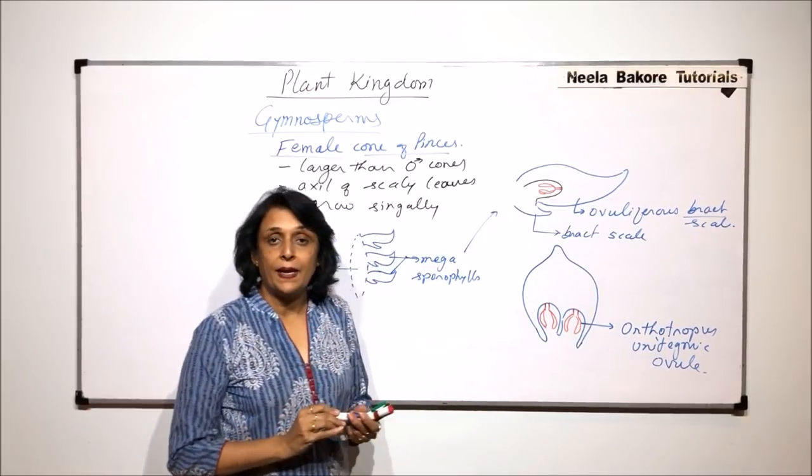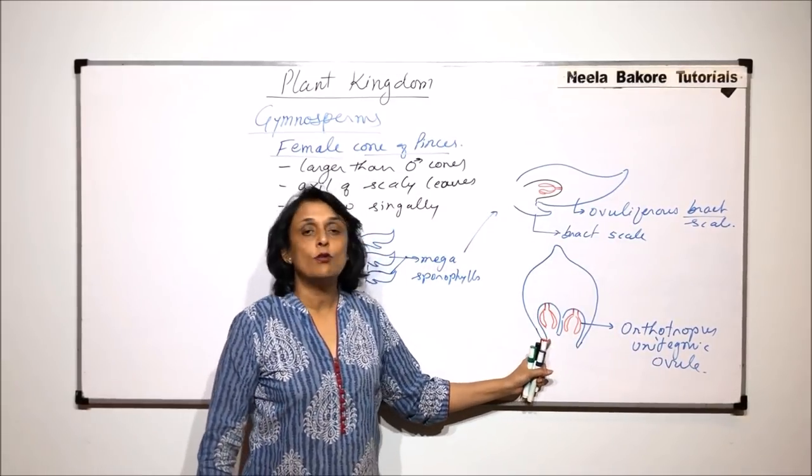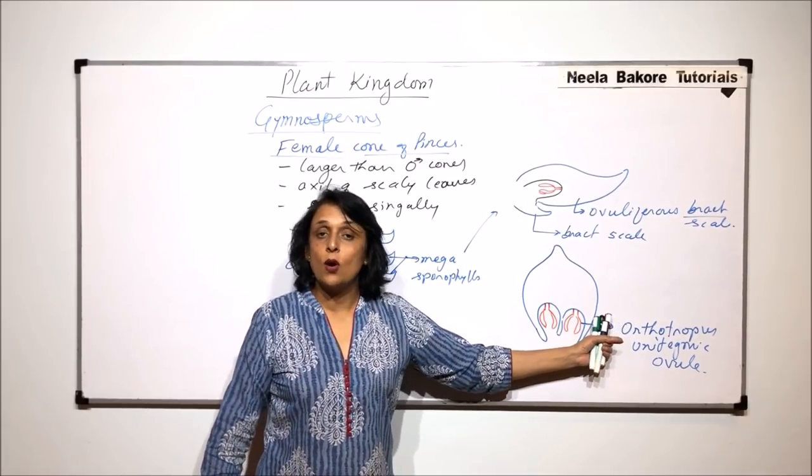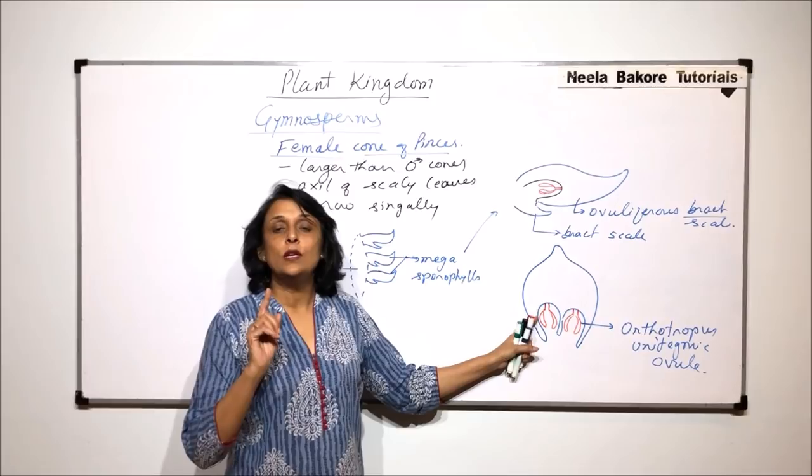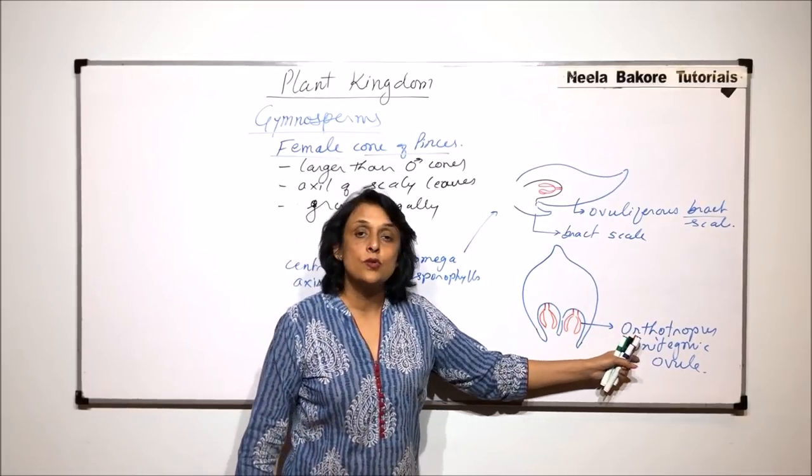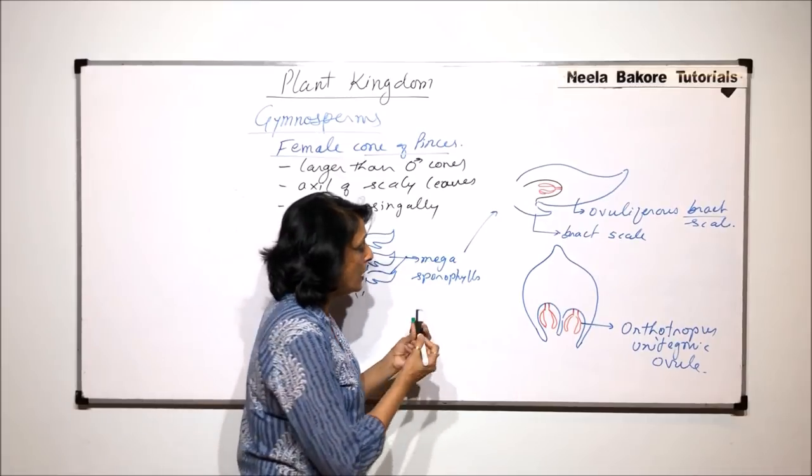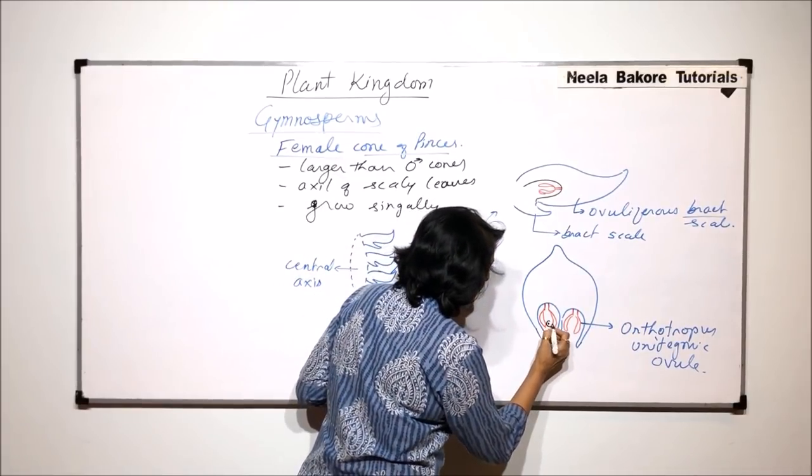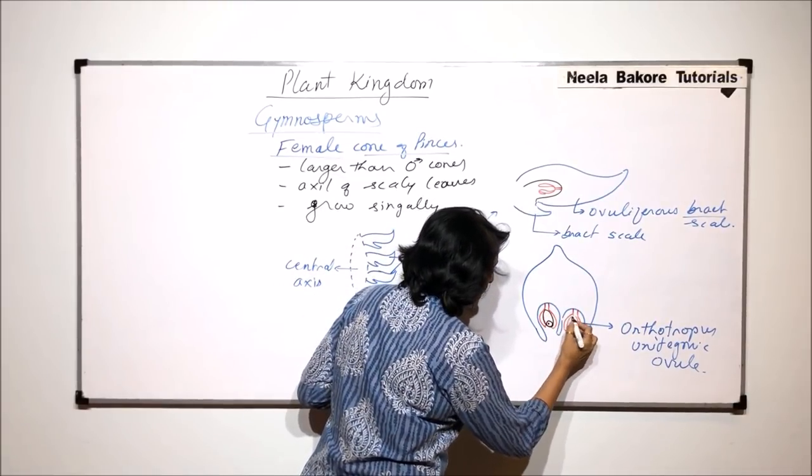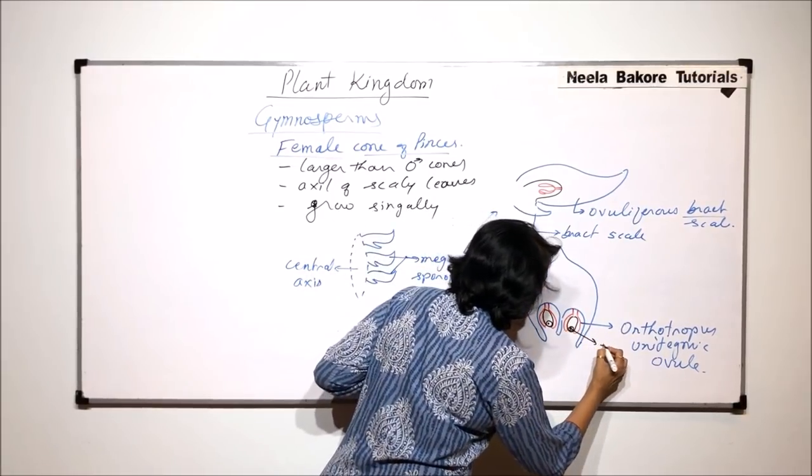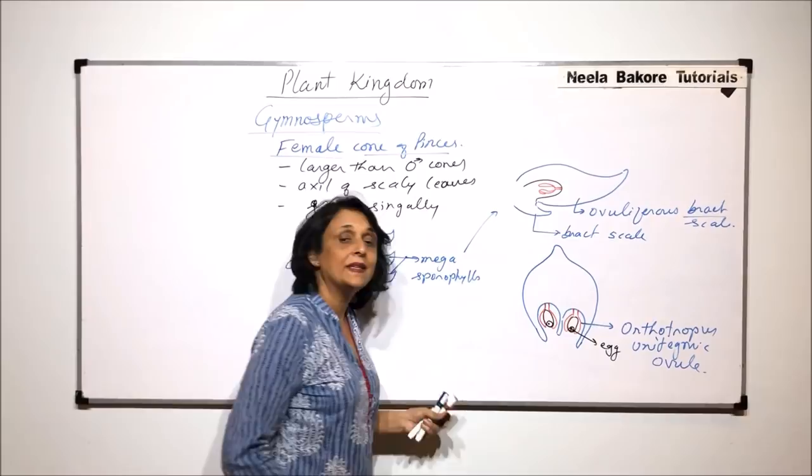Orthotropous means upright. The funicle, micropyle, chalaza, everything is going to be in one line. Then that ovule is known as orthotropous. There is only one integument and so it is known as unitegmic ovule. In this ovule there would be the egg, so all other structures, that is nucellus and those things, would be there, but this is going to be the female gamete, that is egg.